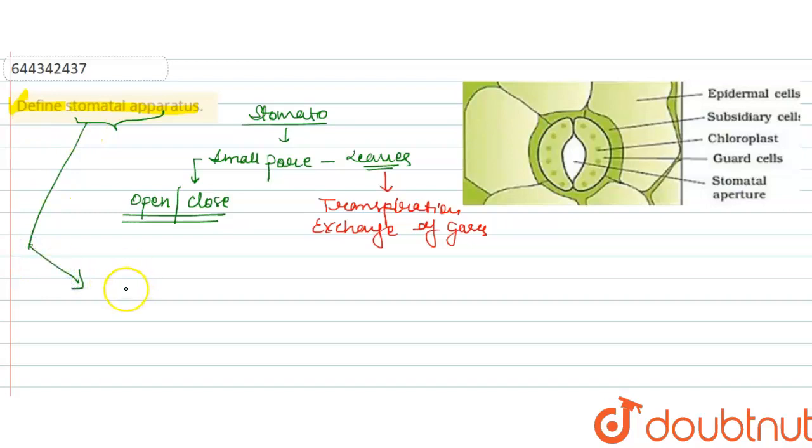You can see here these two cells are the guard cells. So we can say a pair of guard cells with or without surrounding subsidiary cells, this is called the stomata or stomatal apparatus. And the function is as a valve to open and close of stomatal pore.